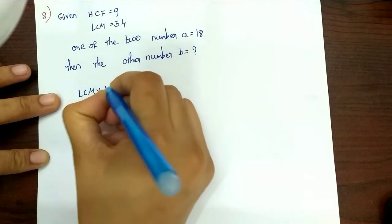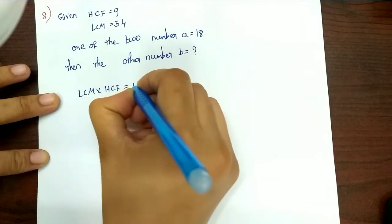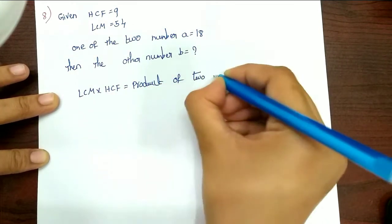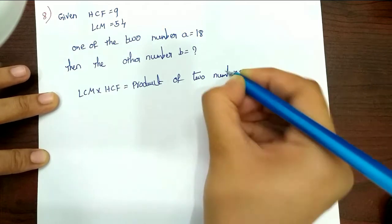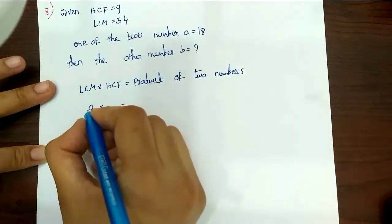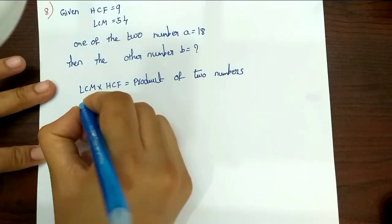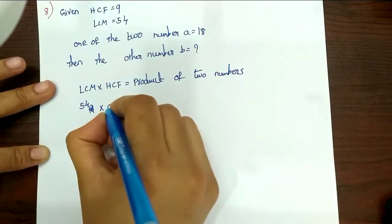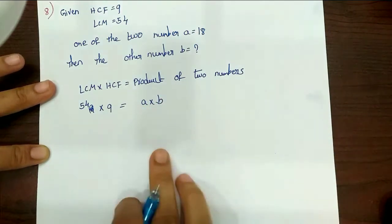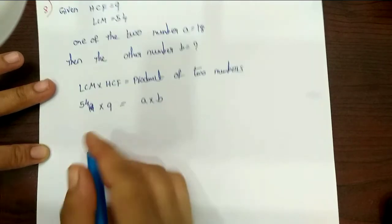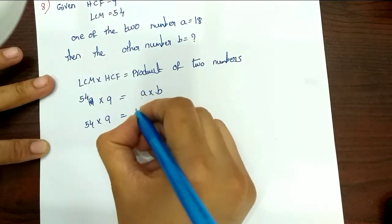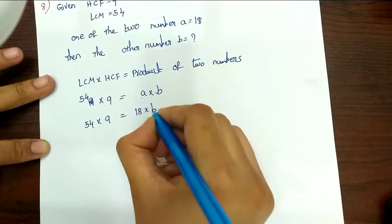LCM into HCF equals product of two numbers. Given: HCF equals 9, LCM equals 54. Put LCM as 54, HCF as 9. Product of two numbers: one number is 18. So 54 into 9 equals 18 into b. Find b.